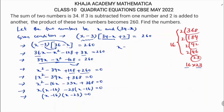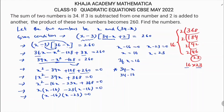So x minus 16 equals 0 or x minus 23 equals 0, giving x equals 16 or x equals 23. If we consider x as 16, then the other number is 34 minus 16, which is 18. So one pair of numbers is 16 and 18.